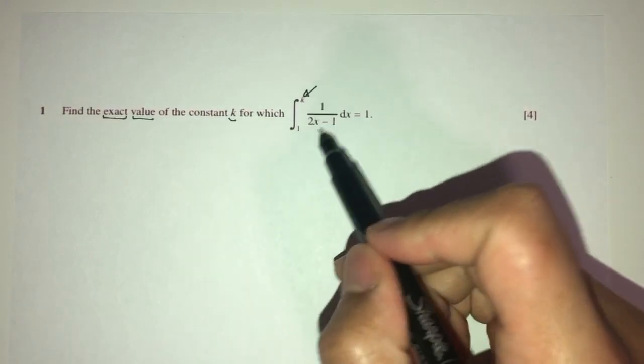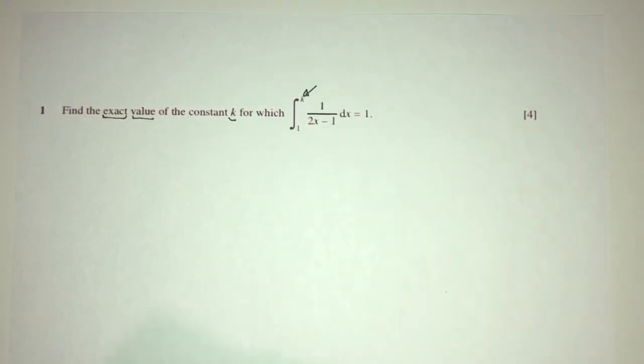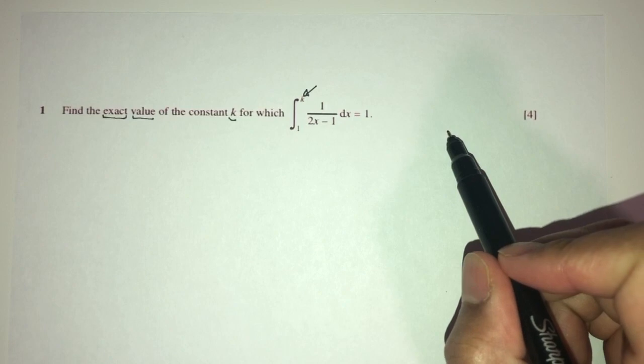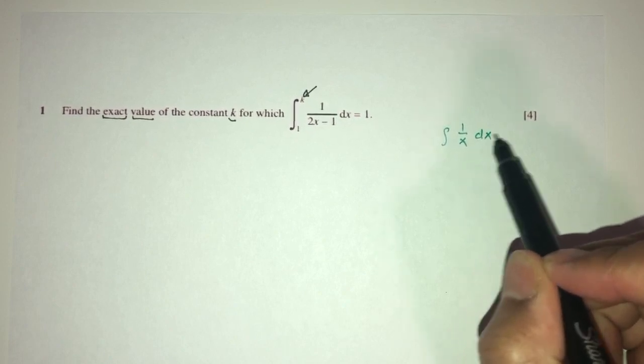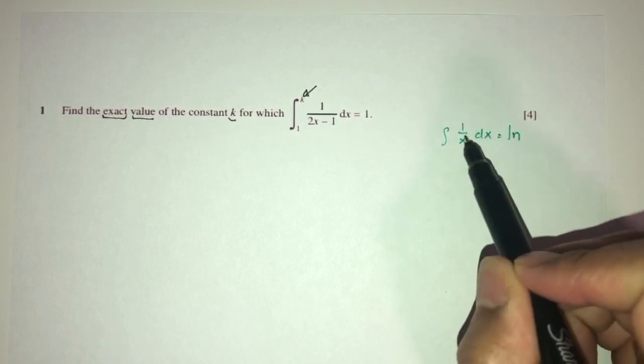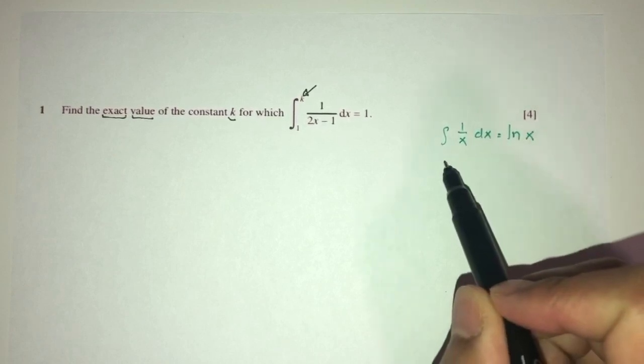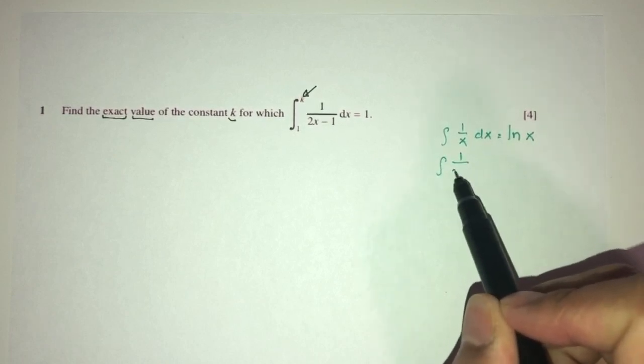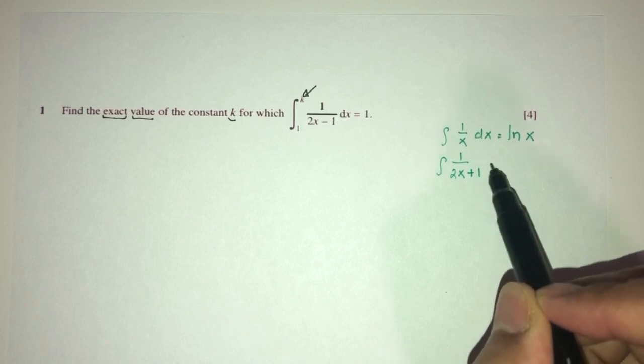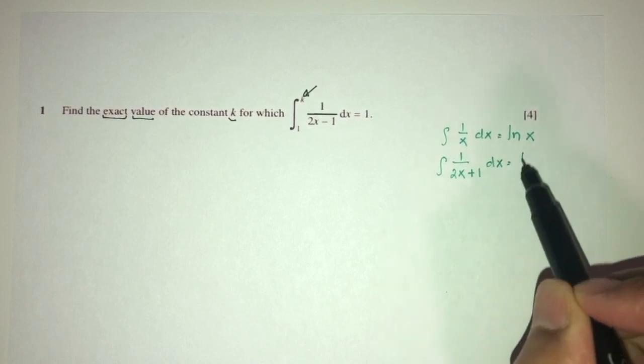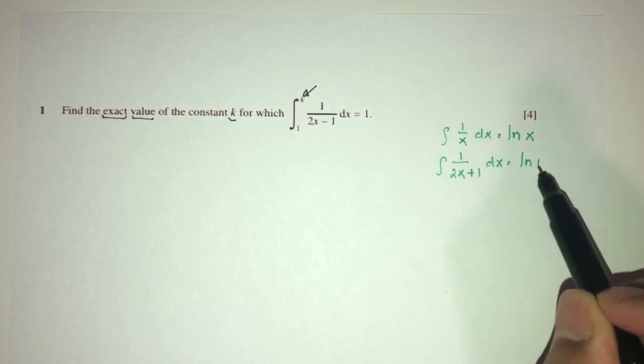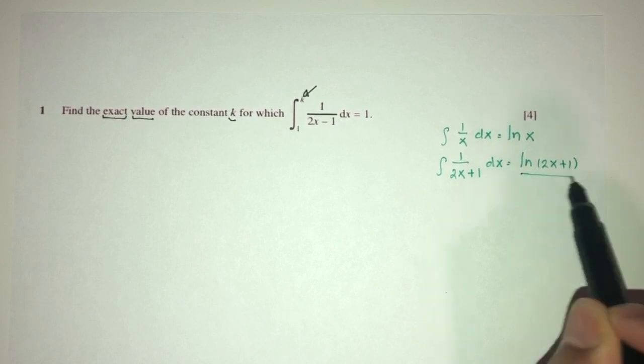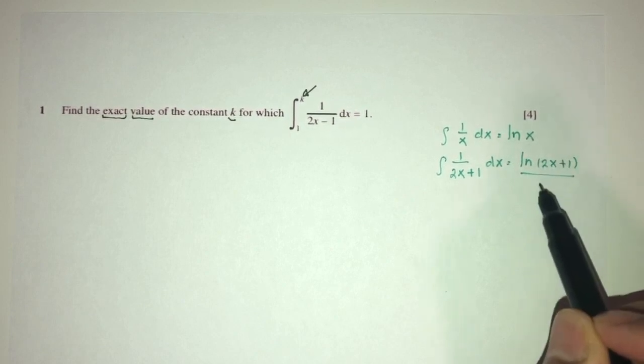We have to integrate this one. How do you integrate this? We need to know, for example, if you were to integrate 1 over x dx, that would be ln of the value below, which is x. For example, 1 over 2x plus 1, that would be ln of the value below divided by d by dx of this one, which is 2.